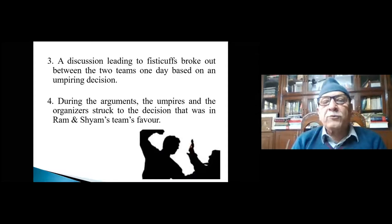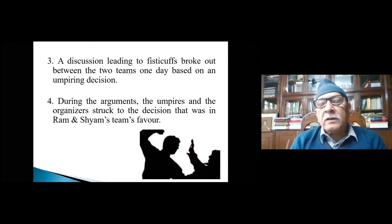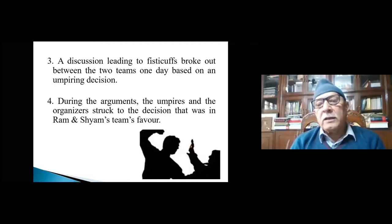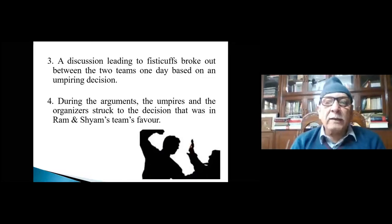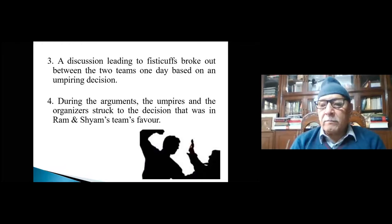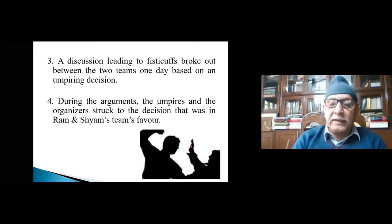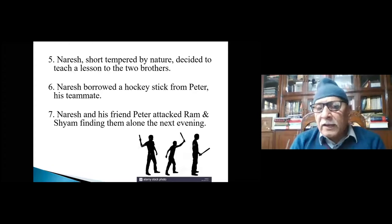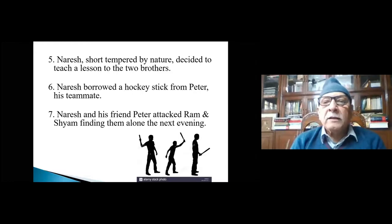While the two teams were on the ground one day, a discussion broke out based on an umpiring decision that appeared favorable to one side. It led to fisticuffs. The umpire and organizers saw the discussion but decided not to change their decision, which was in favour of Ram and Shyam's team. Naresh, who was short-tempered, was not happy with that decision and made up his mind to teach the two brothers a lesson.